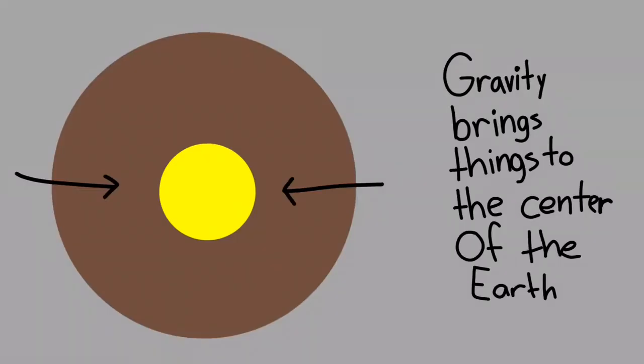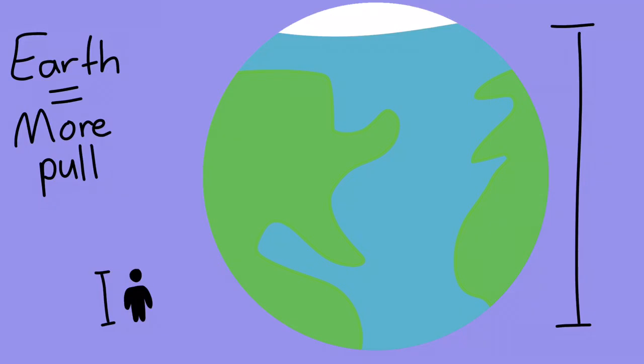Gravity is an unseen force that brings things to the center of the Earth easily. The Earth is much bigger than us, so it has more gravitational pull. That's why we don't fall off the Earth when we're just trying to walk, or trying to jump, or do whatever.